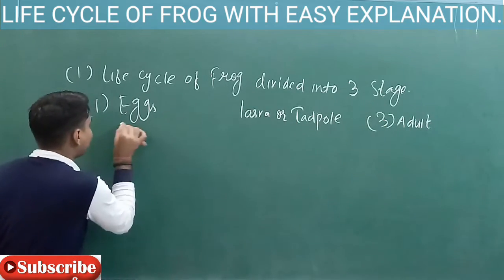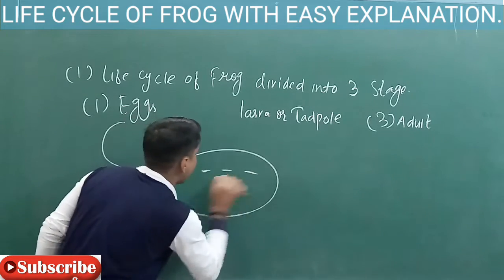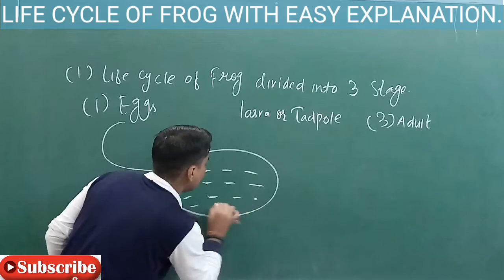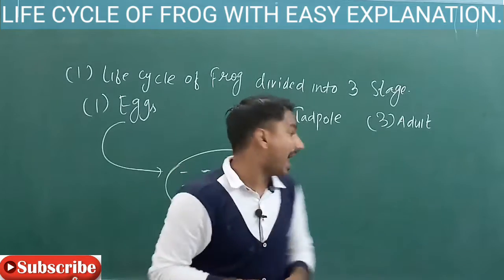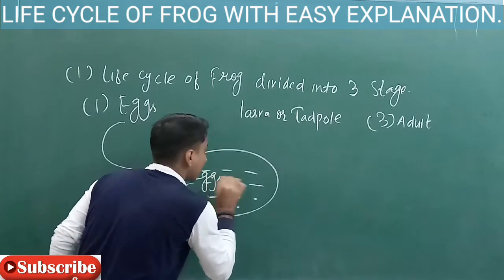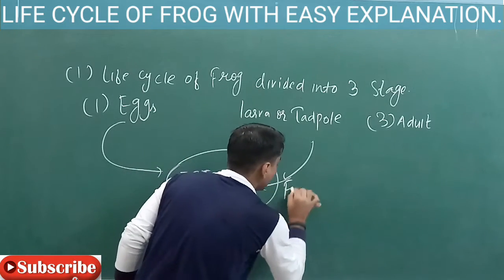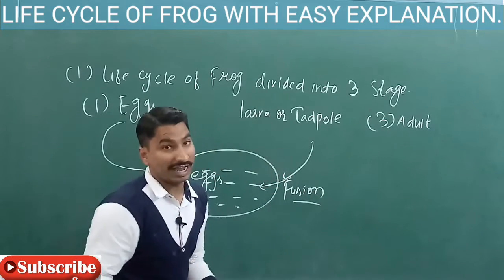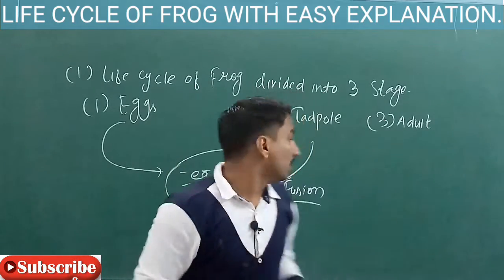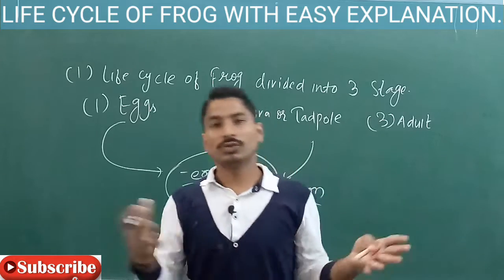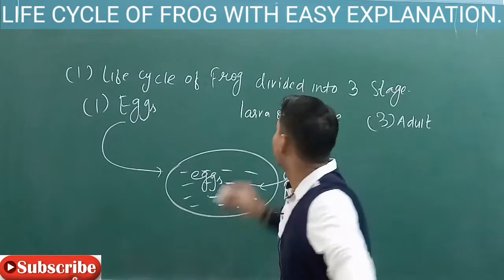When the female frog releases thousands of eggs into the water, because fertilization takes place in the water, the male gamete of the frog fuses with the egg to form fertilization. After fertilization, there is a formation of larva or tadpole.